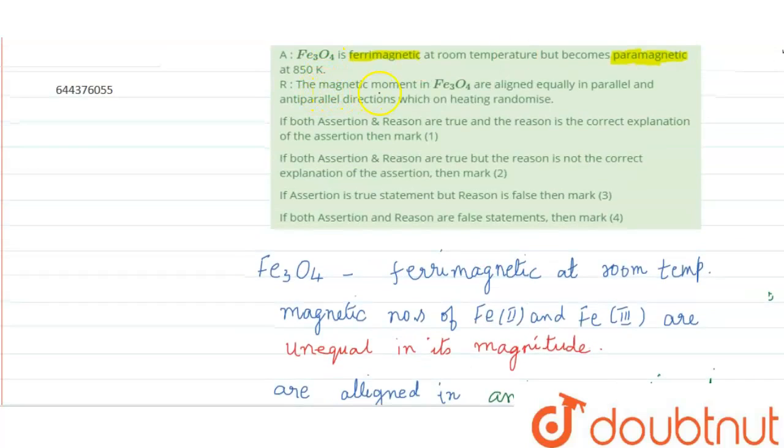Now we have understood why Fe3O4 is ferromagnetic at room temperature and when it is heated to 870 Kelvin, it becomes paramagnetic. The first statement says the magnetic moments in Fe3O4 are aligned equally in parallel and antiparallel directions, but here we have learned that only in antiparallel direction, not in parallel direction. So this sentence is wrong, whereas the first one is correct because it is at room temperature, it is ferromagnetic and paramagnetic at 850.